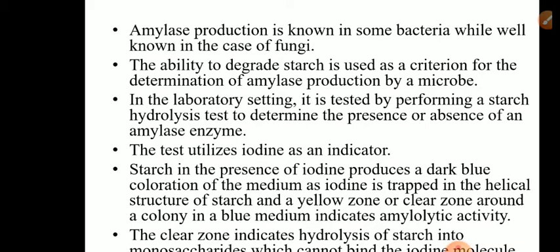Amylase production takes place in bacteria as well as in fungi. What is the basic principle behind this test? The ability of the enzyme to degrade starch is used as a criterion for determination of amylase production by a microorganism. If you want to study whether the given organism produces enzyme amylase or not, you check by its ability to degrade starch. We perform starch hydrolysis by the test organism. If the test organism is able to hydrolyze starch, the organism produces enzyme amylase.